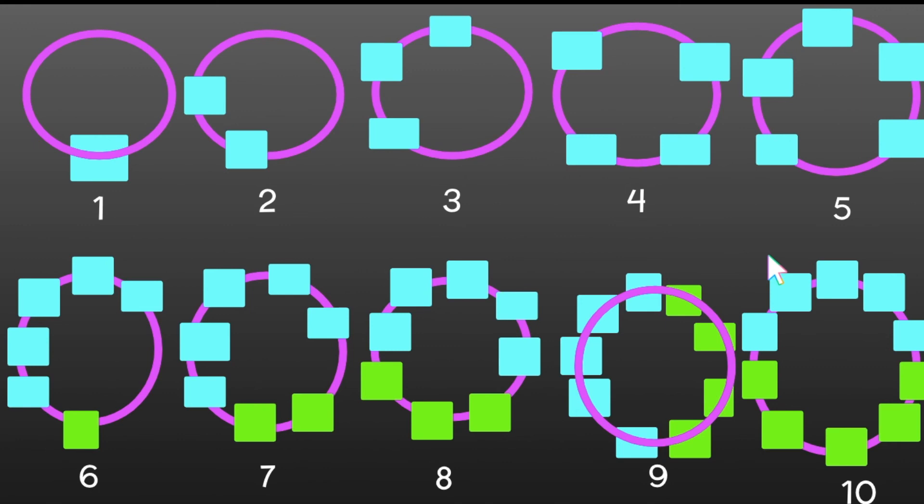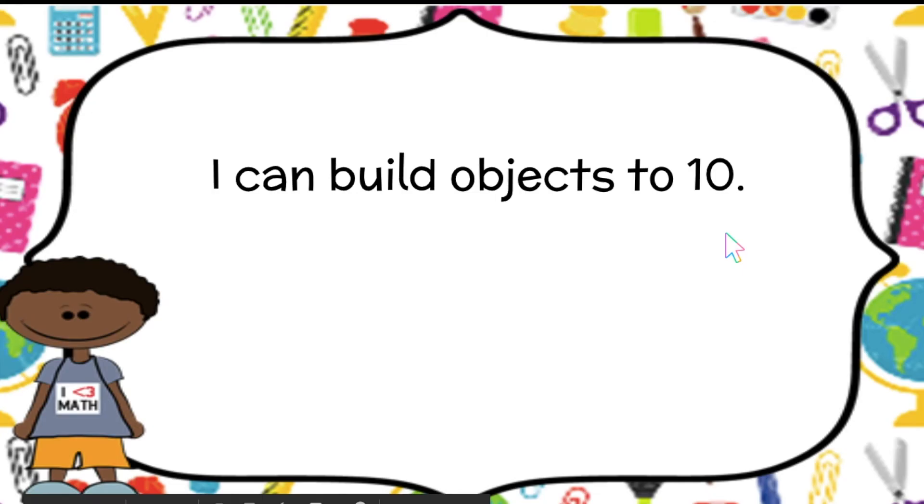Awesome. Now, do you guys see two groups of five? Yep. Here's a group of five here, and here's a group of five here. Awesome sauce. Now, our I can statement said, I can build objects to 10. And that's exactly what we did. Alright, boys and girls, that was your lesson for today. See you soon. Bye.